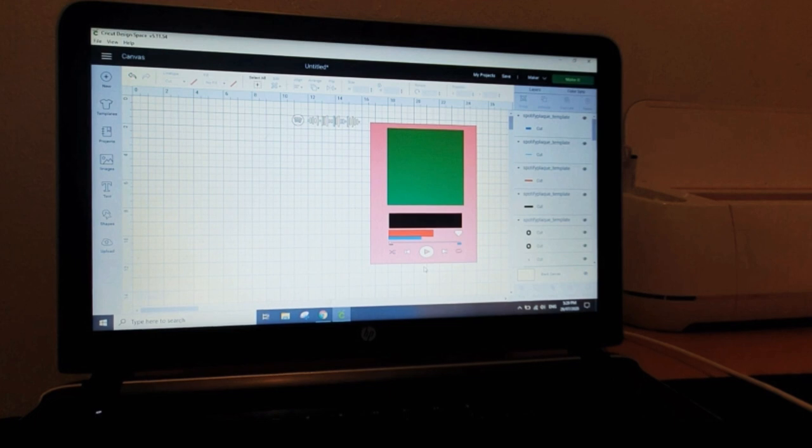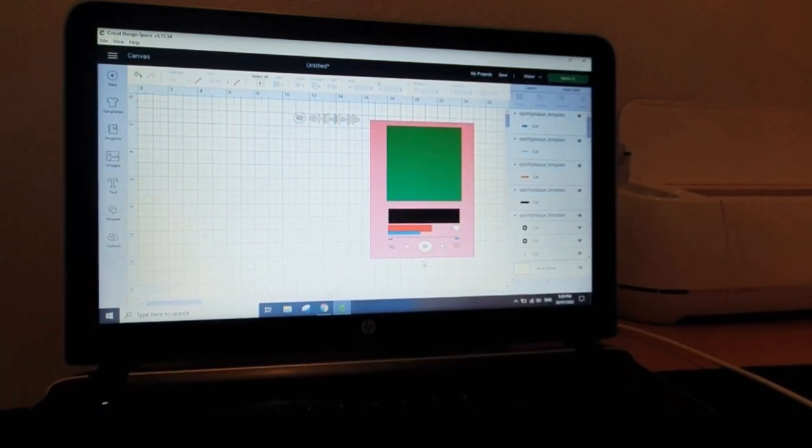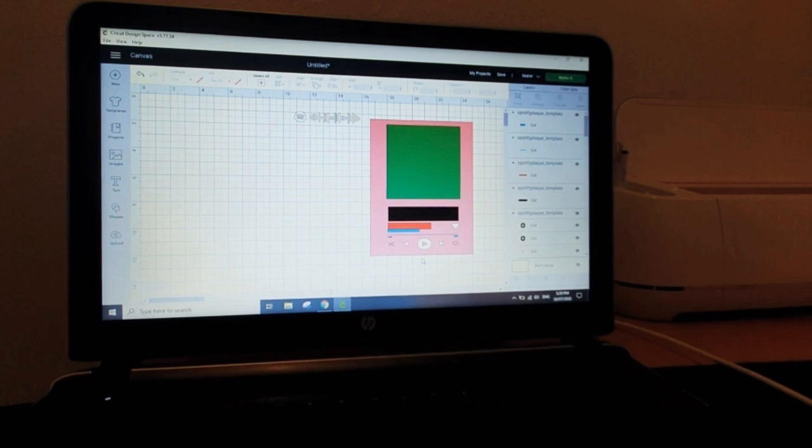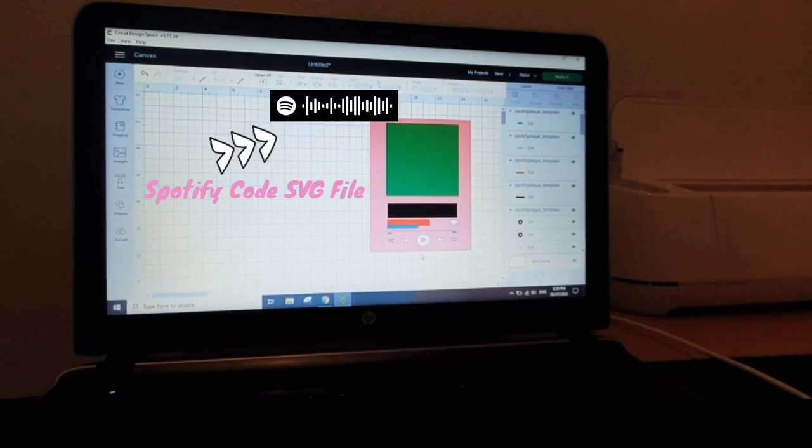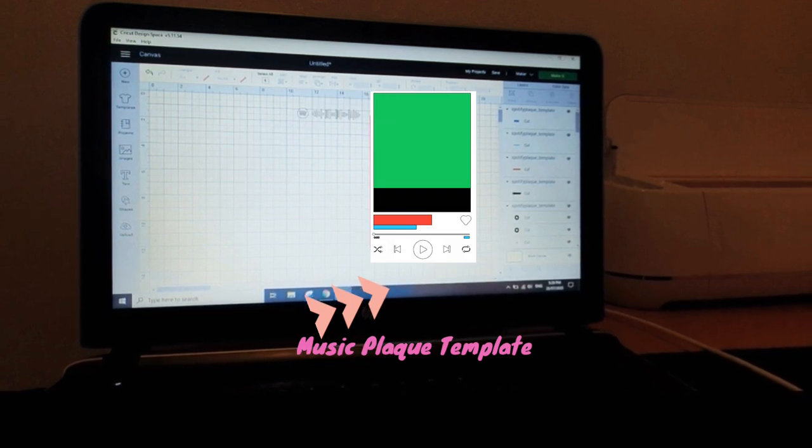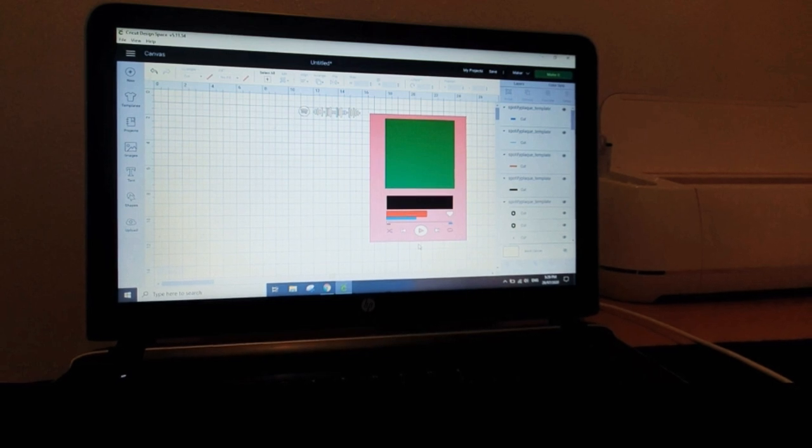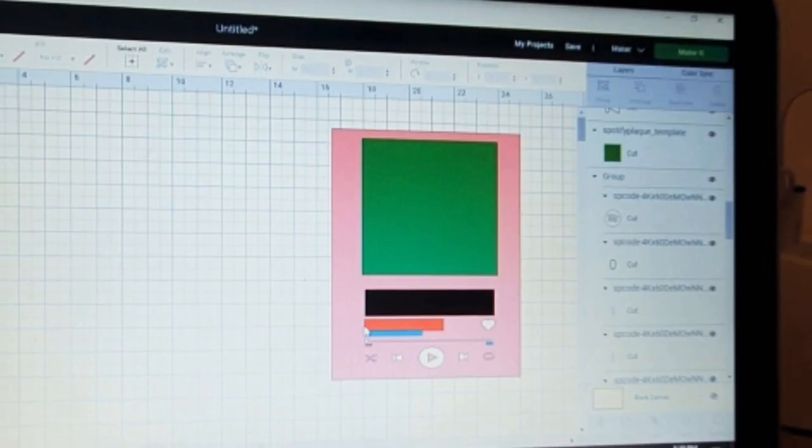Once you've opened your Design Space, you can start by creating a new project, then click the upload button and start uploading your Spotify code SVG file and the template from pocketwonders.com. I'll leave the link down below in the description box for your reference.